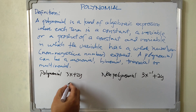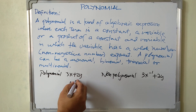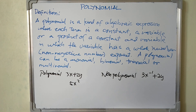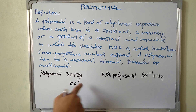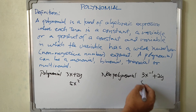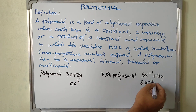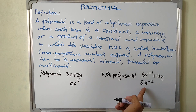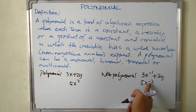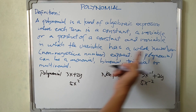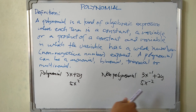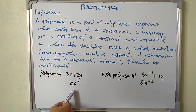Another example: 5x squared — the exponent is 2, a whole number, so this is a polynomial. A non-polynomial example is 5x raised to negative 2. This is not a polynomial because the exponent is negative, and the definition says the exponent must be a whole number or non-negative number.